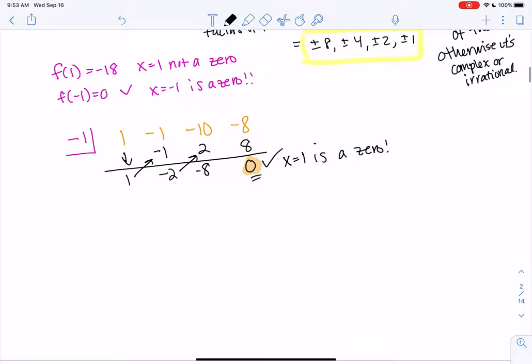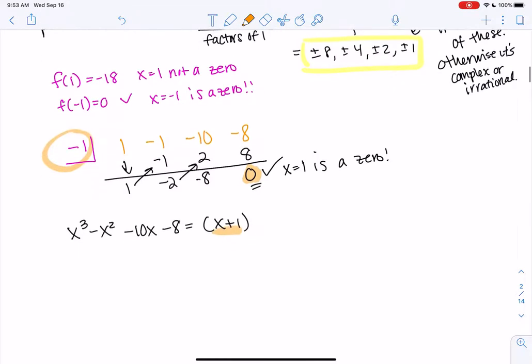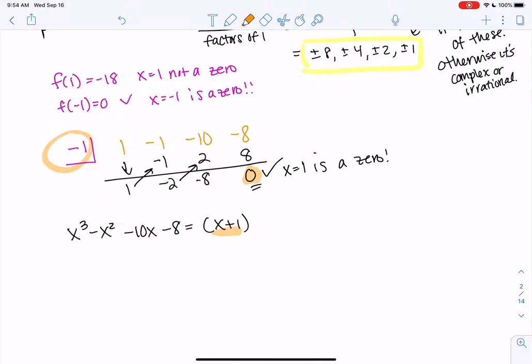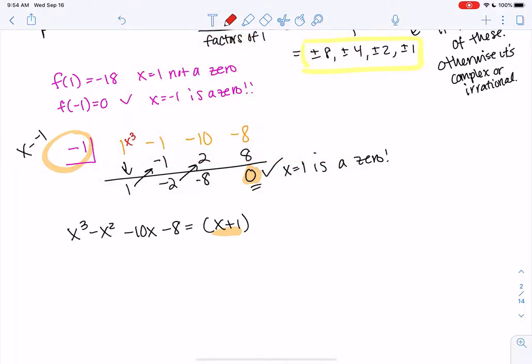So then this will give us a new polynomial and then we can try to solve that one. So we have x cubed minus x squared minus 10x minus 8 is now equal to x plus 1. That's from this for x minus negative 1. And then now we have 1 degree less. So this was x cubed. So now we have x squared. So we get x squared minus 2x minus 8.